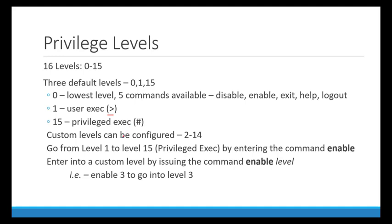We can do that via custom levels. Our custom levels can be configured — those are levels 2 to 14. We'll go from level 1 to level 15 by simply entering the command 'enable'. By default, when you type enable, you get into level 15. If you want to enter a custom level, you issue the command 'enable' and the level number, for example 'enable 3' to get into level 3.